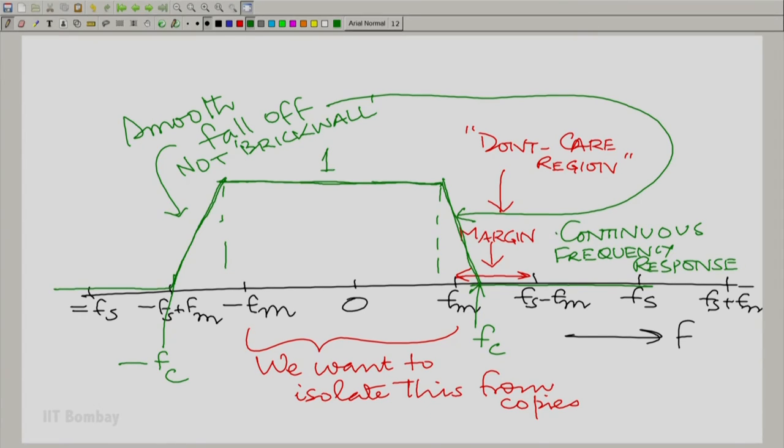It is the discontinuity in the frequency response which creates instability. The proof of this statement is a little beyond the scope of this discussion, but it is an open challenge. If we accept that as an advanced result, then moving from the brick-wall response to a smoothly dropping response saves us from dealing with an unstable system for reconstruction — and that is possible because of the margin we introduced.